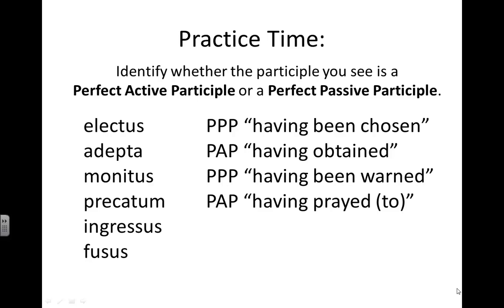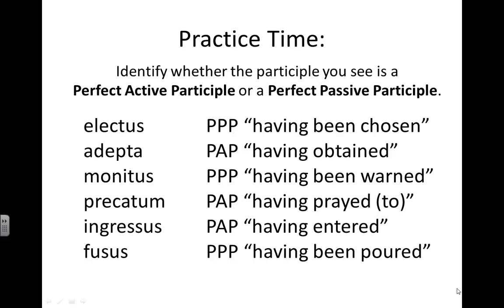Precatum is the perfect active participle. On your Stage 22 vocabulary checklist, it's given to you as precatus, precata, precatum — simply as an adjective, therefore a perfect active participle. Ingressus, just as precatum, is listed as an adjective — it's a perfect active participle. And lastly, fusis is a perfect passive participle from the verb fundo, fundere, fudi, fusis.